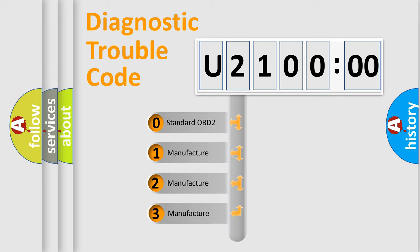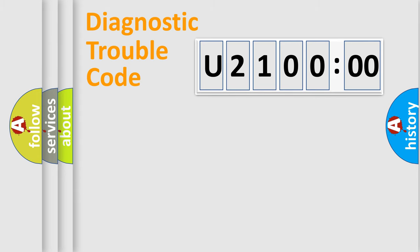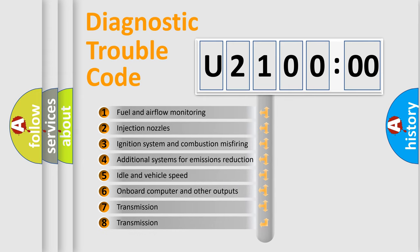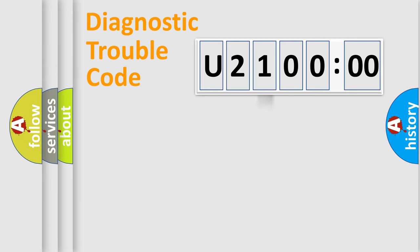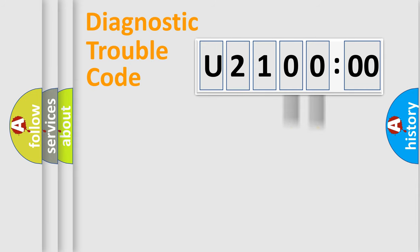If the second character is expressed as zero, it is a standardized error. In the case of numbers 1, 2, or 3, it is a more specific expression of a car-specific error. The third character specifies a subset of errors. This distribution is valid only for the standardized DTC code, and only the last two characters define the specific fault of the group.